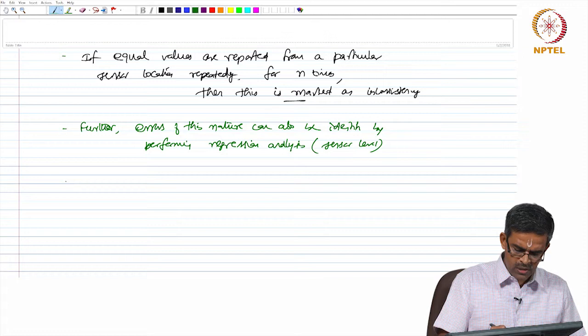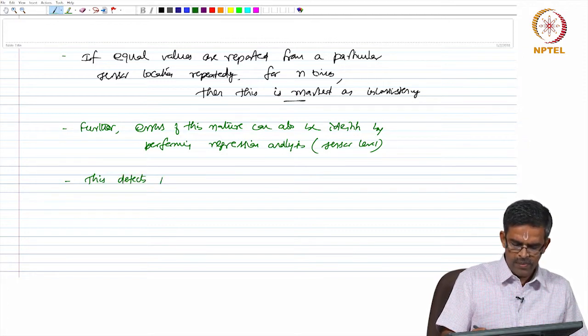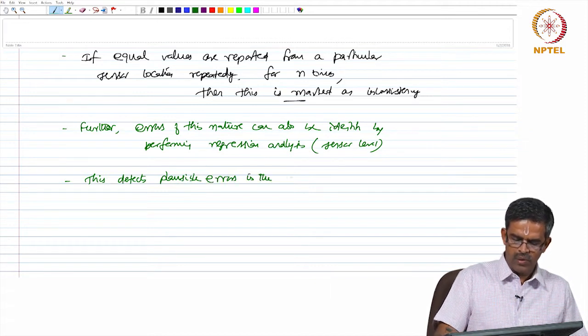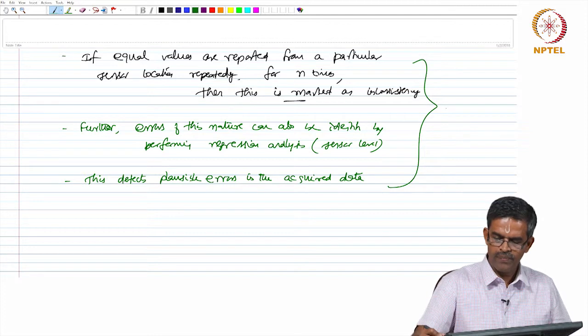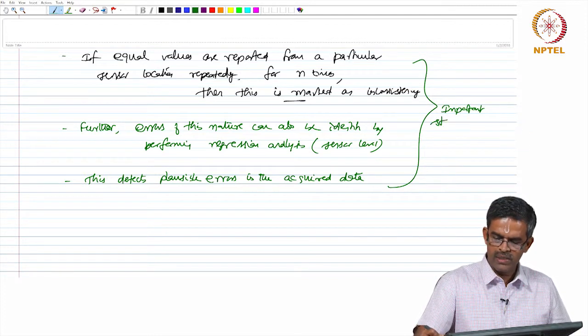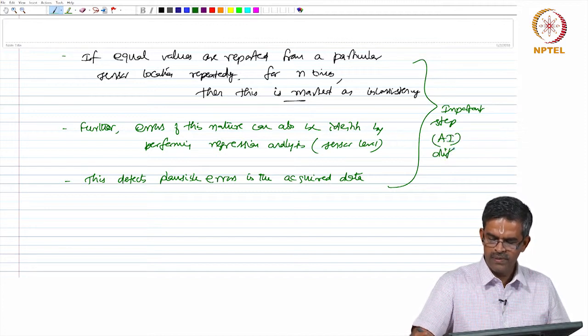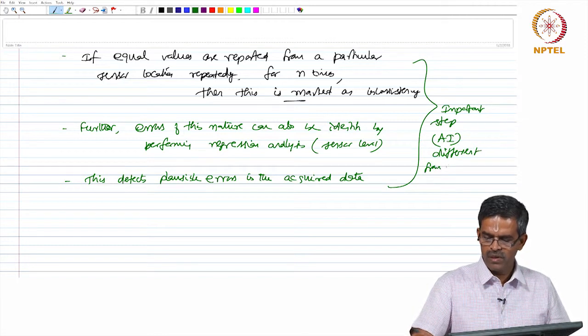This detects plausible errors in the acquired data. That is a very important step which makes artificial intelligence different from the conventional SHM.